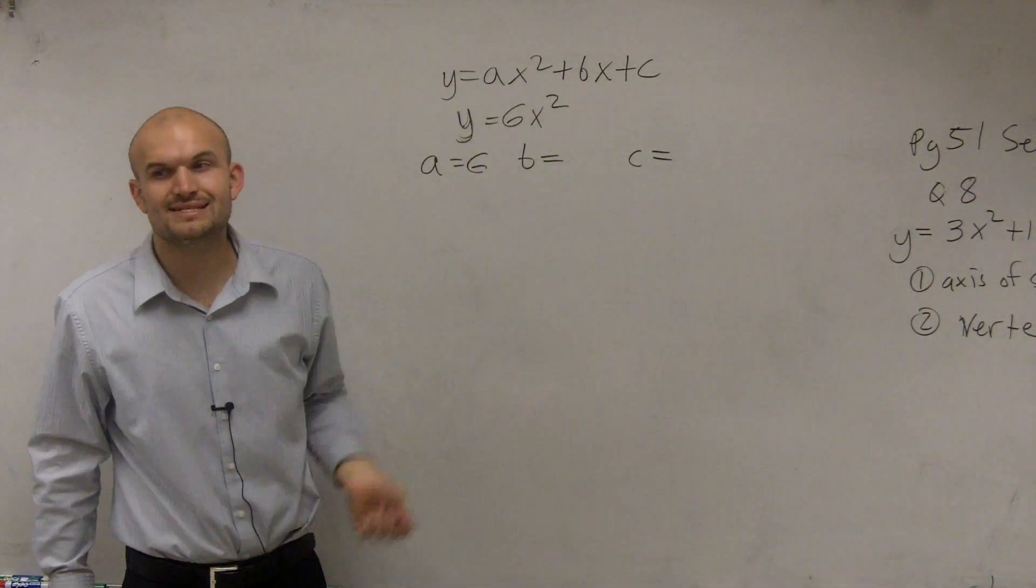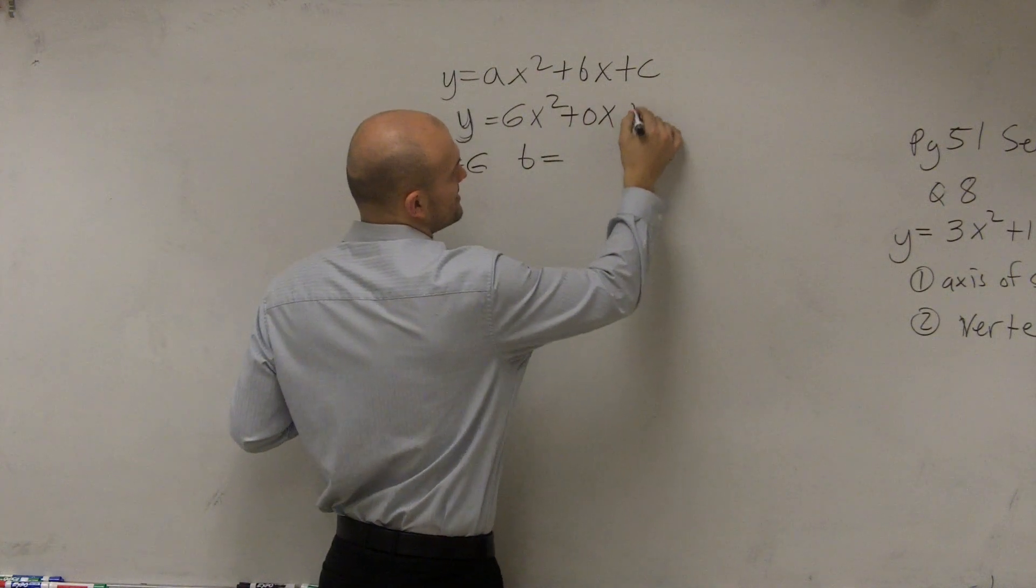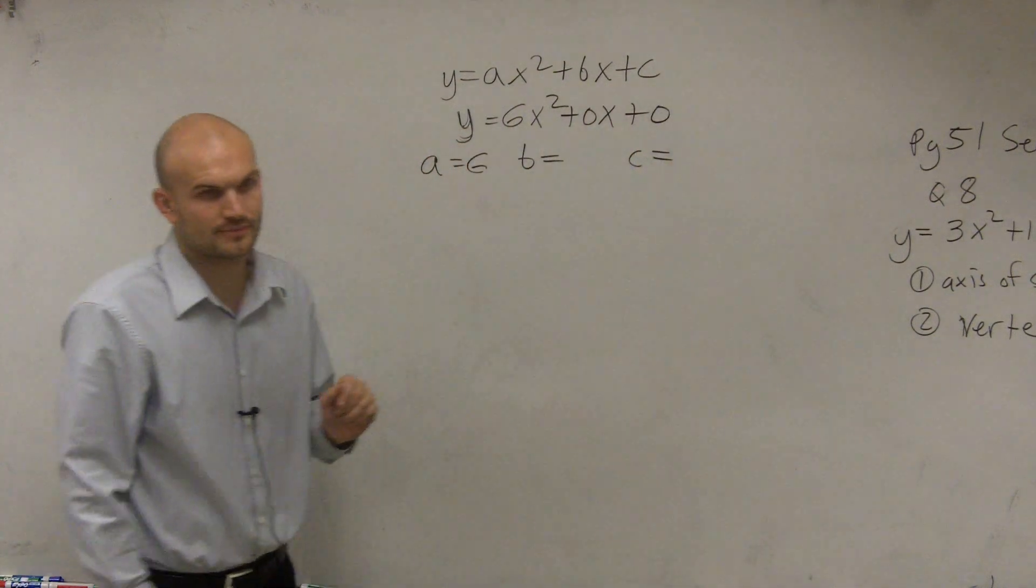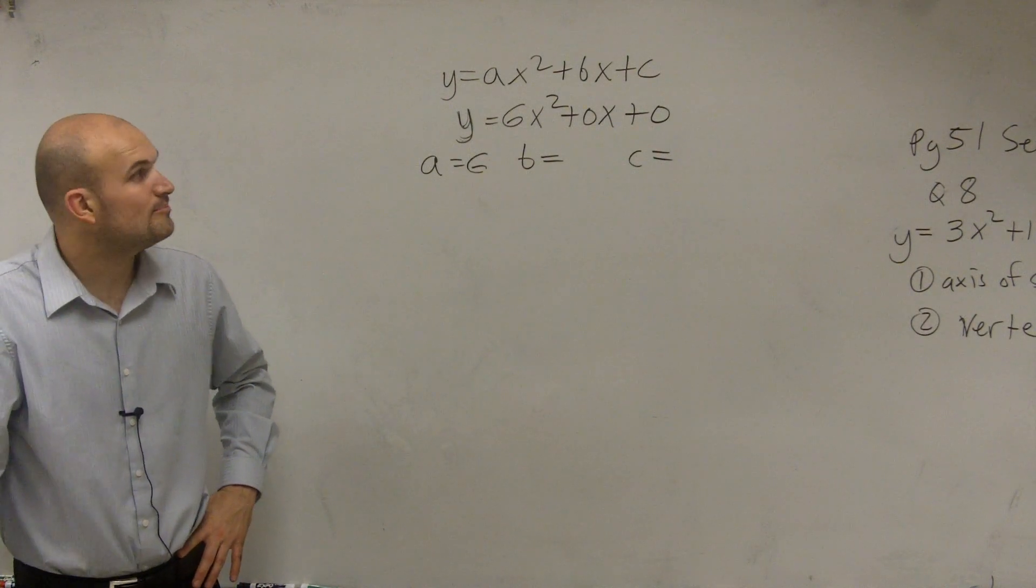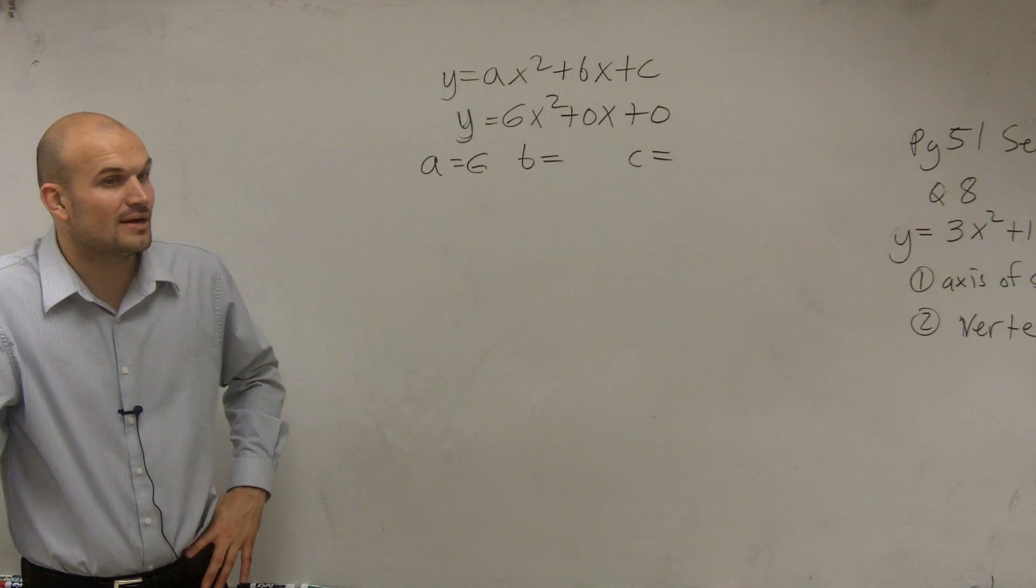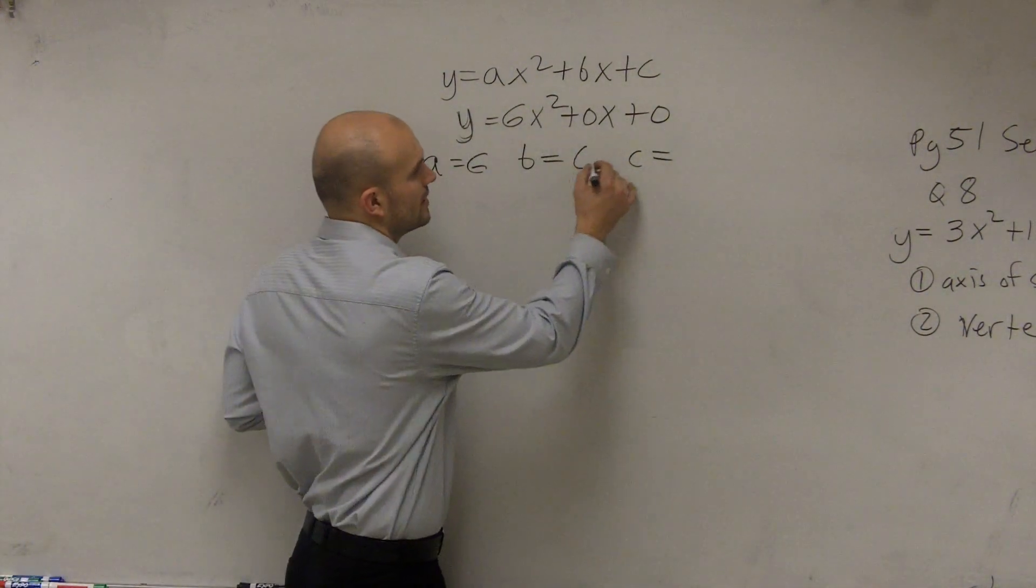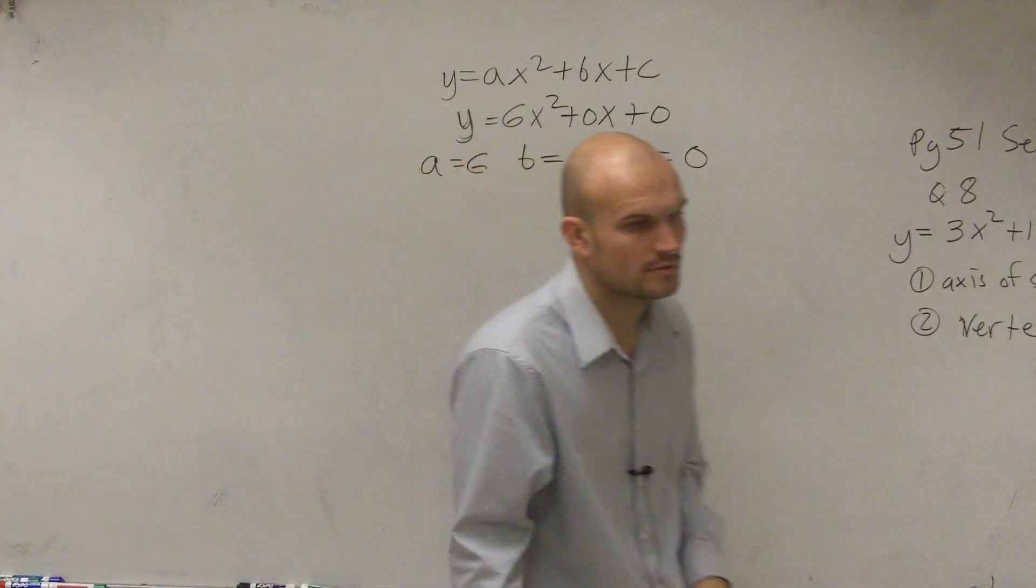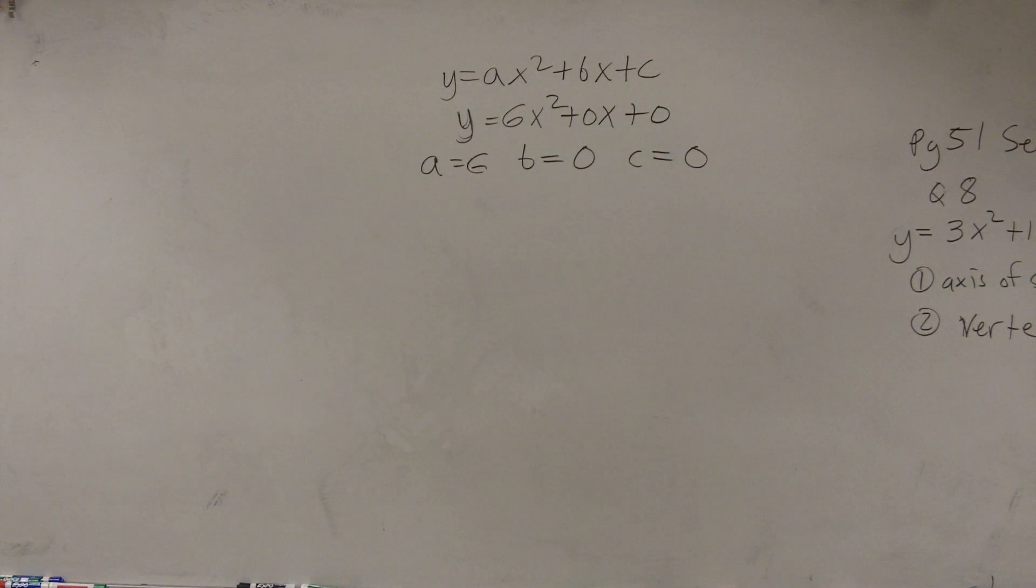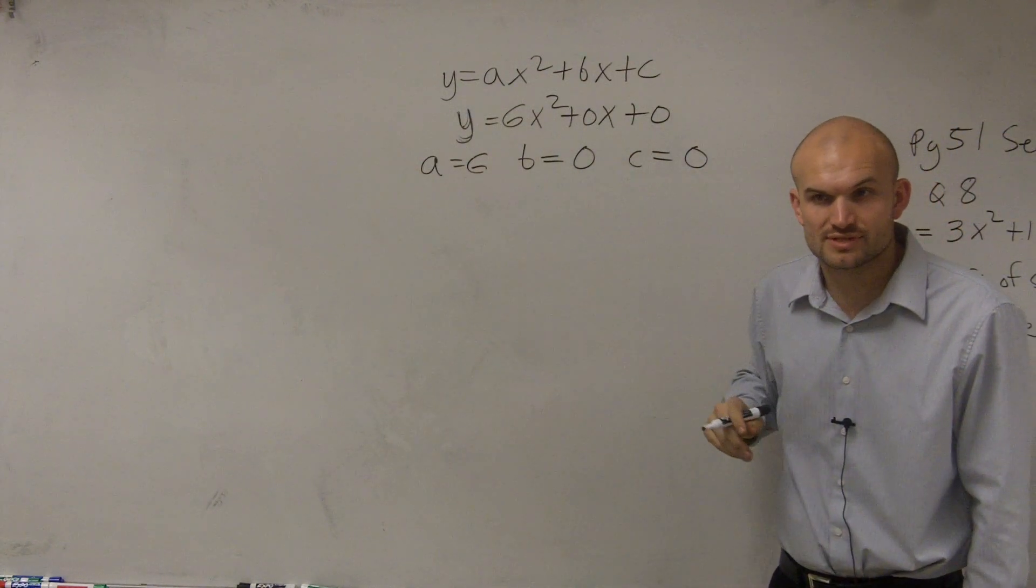So what could b and c be? Well, I can rewrite them with place value of 0x plus 0. Could you just put them in as 6x squared plus bx plus c? Well, b and c represent any number. And they actually do evaluate a number, which is 0. So they're going to represent 0. So you have a equals 6, b equals 0, and c equals 0. All right?